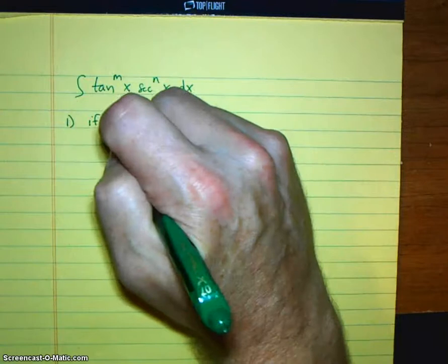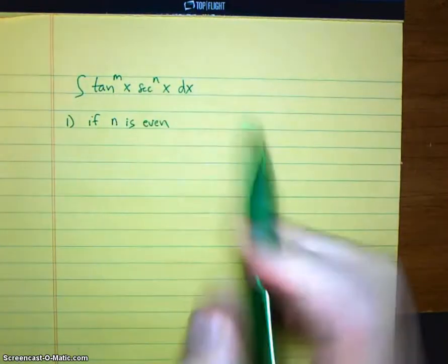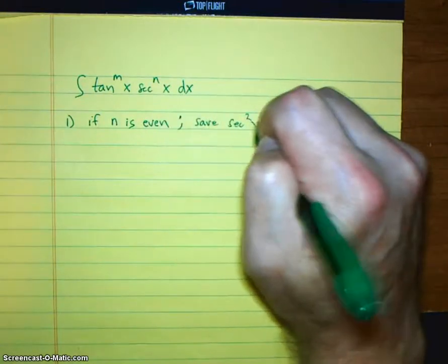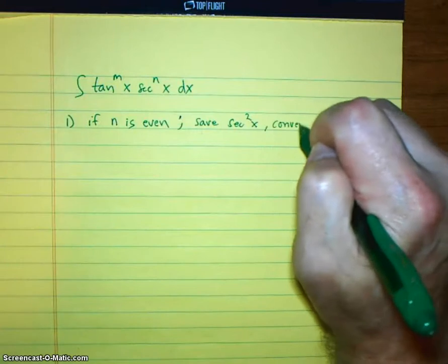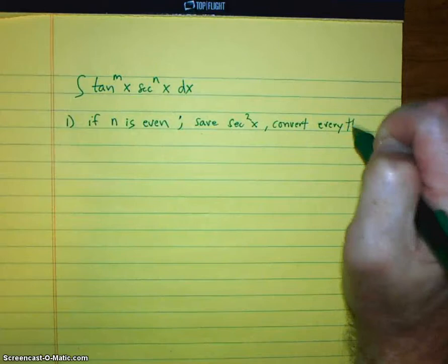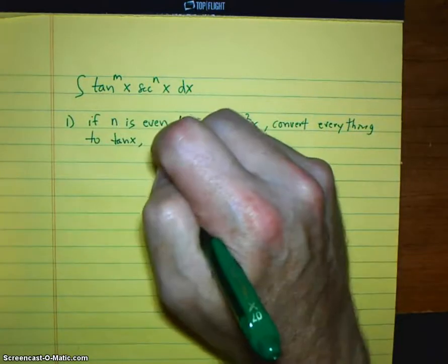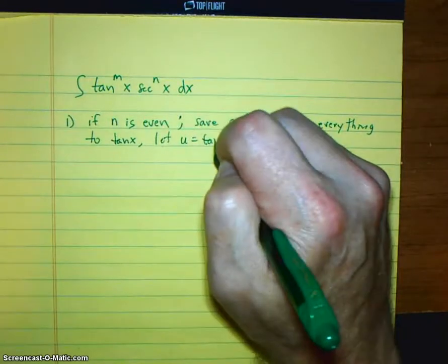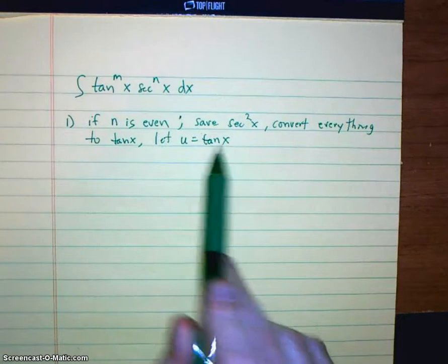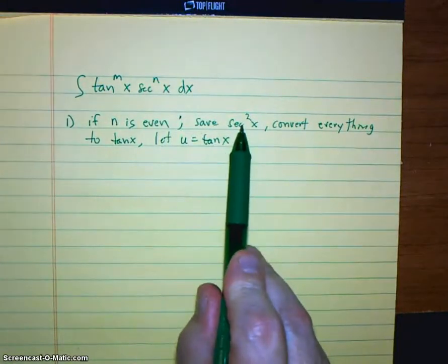If n is even. So in other words, if the secant has an even power. Save secant squared x. Convert everything to tangent x. Let's let u be tangent x. Because the derivative of tangent will give us secant squared. So that's why we're saving us secant squared to make this a u substitution.